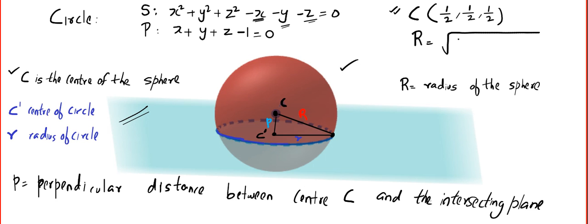Square all the quantities: 1/4 + 1/4 + 1/4 minus the constant in the equation of the sphere. There is no constant, so it is 0. That gives me R = √3 / 2. So I found capital R and I found the center.